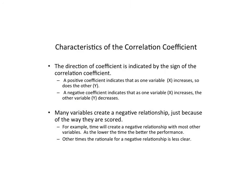The strength of the relationship is based on the absolute value, while the direction of the correlation is indicated by the sign. A positive correlation, indicated by a positive sign, suggests that as one variable increases, another variable will also increase — as x increases, y will also increase. In comparison, a negative relationship, indicated by a negative sign, means as one variable increases, the other decreases. For example, as hours of practice for a race increase, your time in the race would hopefully go down, suggesting a negative relationship.